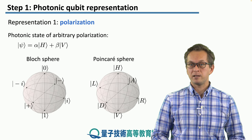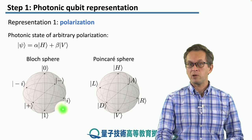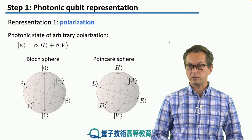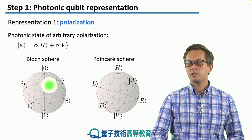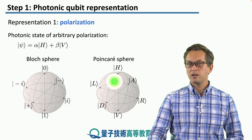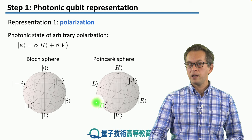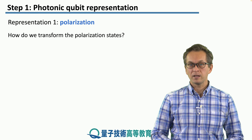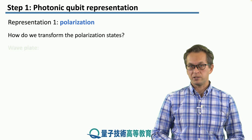This allows us to represent the state of a polarization qubit on a sphere as well. Recall the Bloch sphere representation — zero is at the top, one is at the bottom, and corresponding states are in the horizontal plane. For polarization, we use the name Poincaré sphere for historical reasons. Here H is at the top, the vertical polarization state is at the bottom, and the D, A, R, and L states are in the horizontal plane. Now that we know how to encode information into polarization, how can we transform the polarization states?